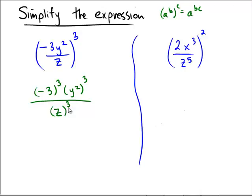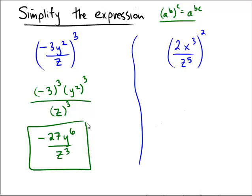Now negative 3 to the power of 3 is negative 3 times negative 3 times negative 3. That would be negative 27. Y squared cubed by the power rule would be y to the sixth. And then z cubed is just simply z cubed. So that would be our final answer to this problem.